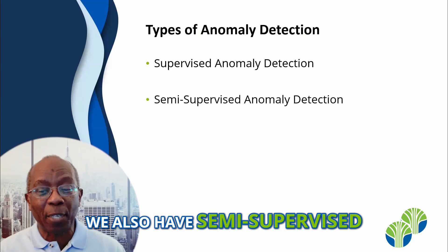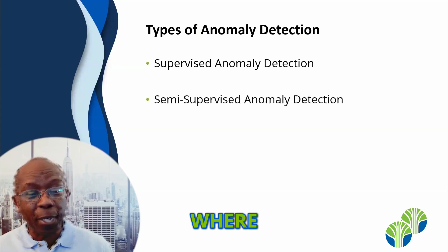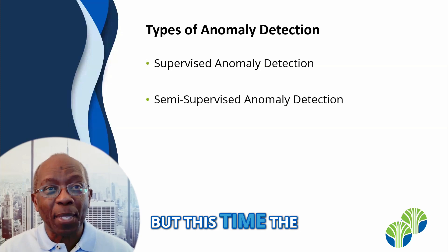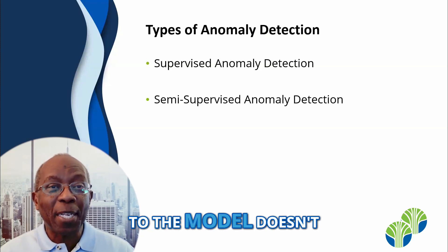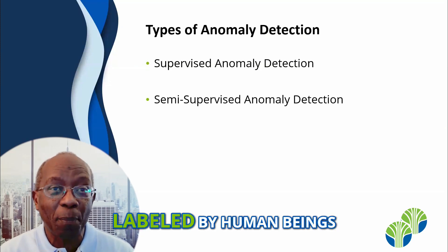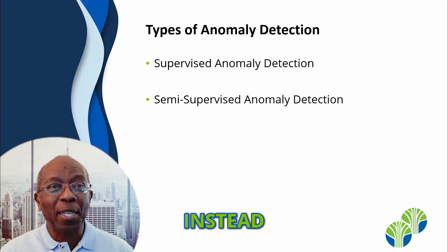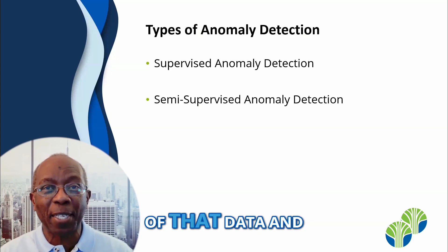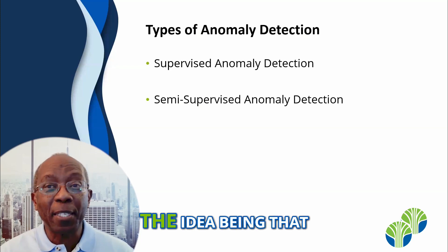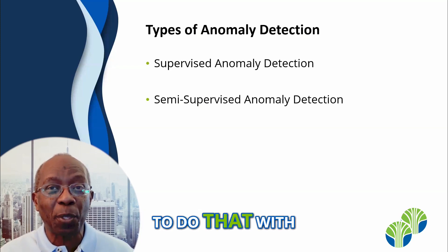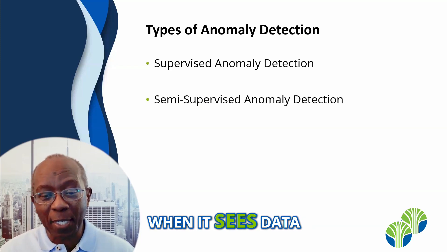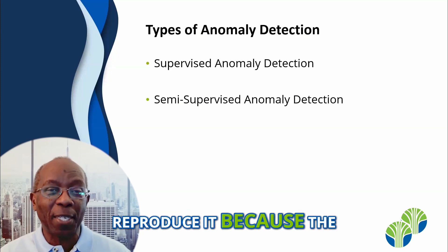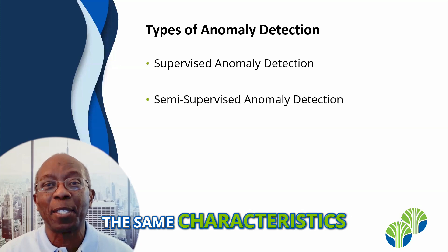We also have semi-supervised anomaly detection, where again we have a period where we train the model, but this time the data given to the model doesn't have to have been labeled by human beings. Instead, the model tries to first make a representation of that data and then reproduce it. The idea being that if it is able to do that with normal data, when it sees data that is not normal, it will fail to reproduce it because the data will not have the same characteristics.